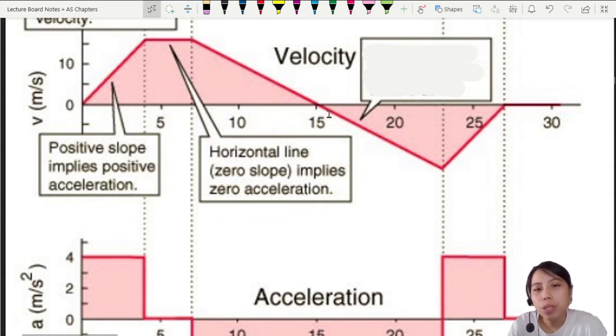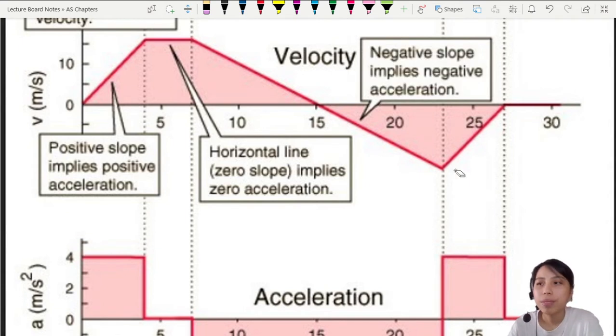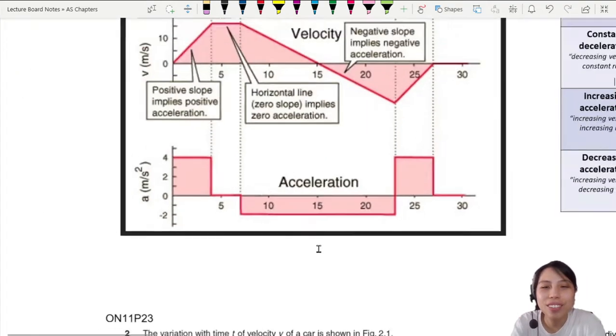Then you come to this part. Negative slope all the way. Then we say that means we have negative acceleration. Or in other words, acceleration in the opposite direction. And then of course, you can plot the acceleration and how it actually looks like.